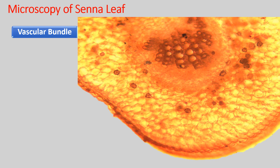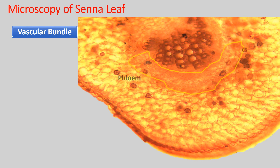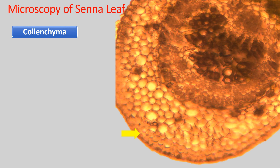The vascular bundle of Senna is called a collateral vascular bundle. It has xylem made up of large lignified vessels. Just below the xylem is the phloem — the location of xylem and phloem side by side is why they are called collateral vascular bundles. Collenchyma is the tissue present only on the lower or ventral surface of Senna and is restricted only in the midrib section. The cells are compactly arranged with no intercellular space, providing flexible mechanical support.